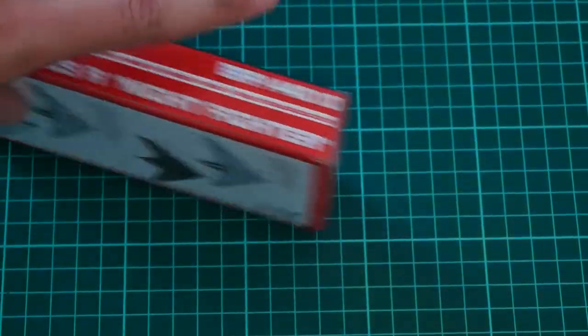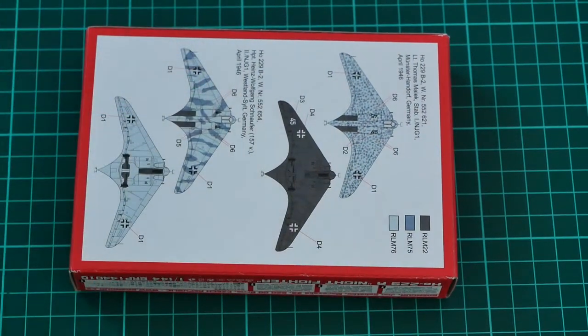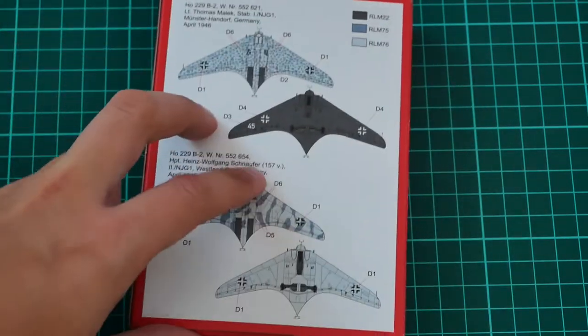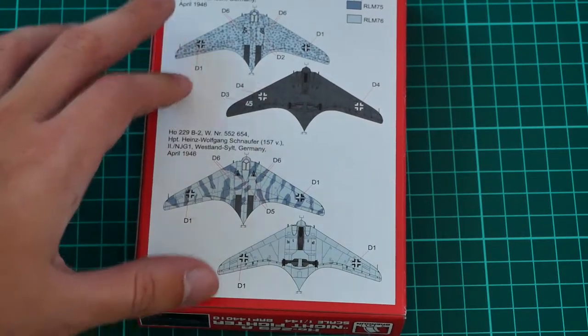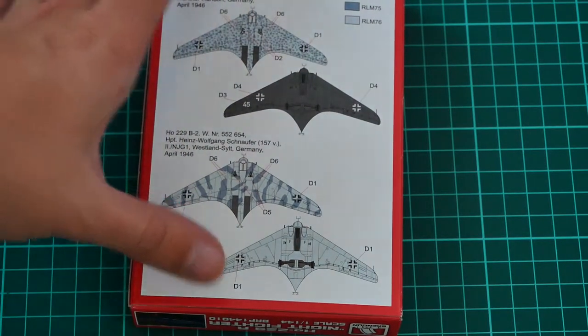Also here we have some information about the manufacturer, and here you can see two marking options which are included in this kit. These are quite interesting and they should look really unusual in 1:144 scale. Now let's open this box and check what is inside.